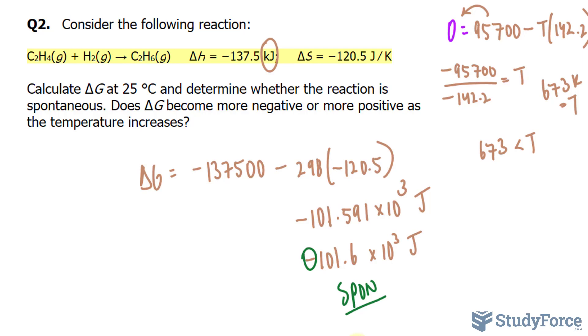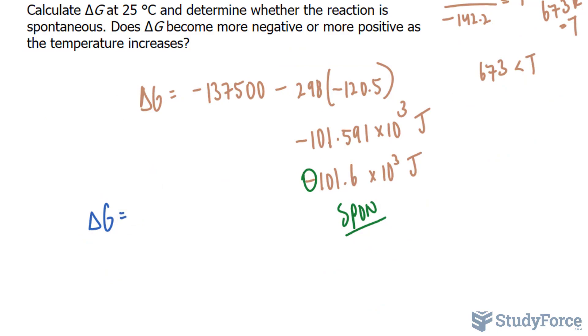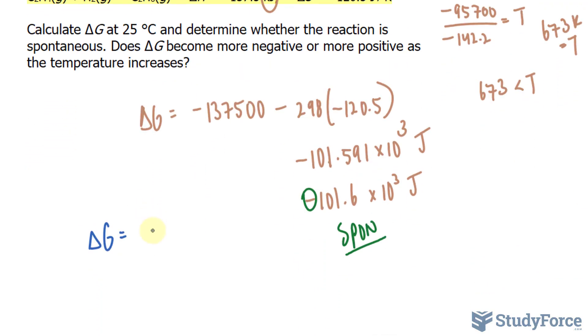And it's asking, does delta G become more negative or more positive as the temperature increases? Notice the numbers here are negative, whereas in question one, they were both positive. So if we set this up, delta G is equal to, and remember that delta H was negative, negative, minus a temperature, and delta S was also negative. So hypothetically speaking, if we were to place a positive number right now into T, just think of a positive number. We would end up with negative, that positive number, which makes it negative. Negative and a negative make a positive.